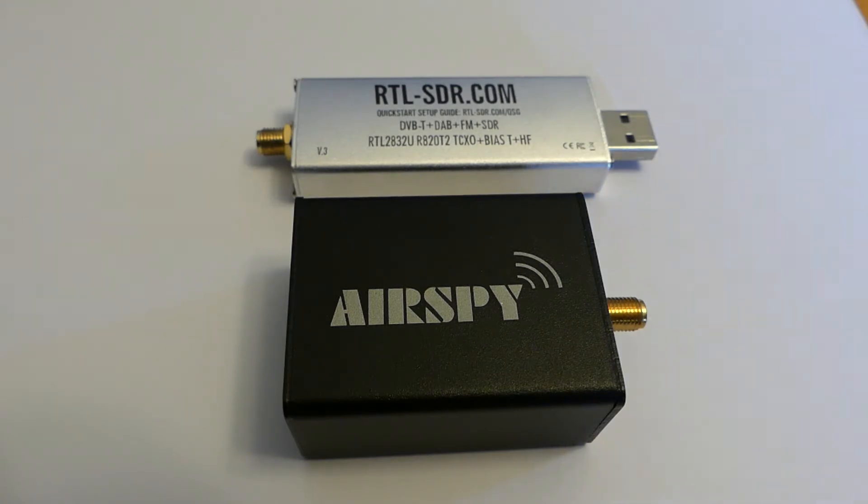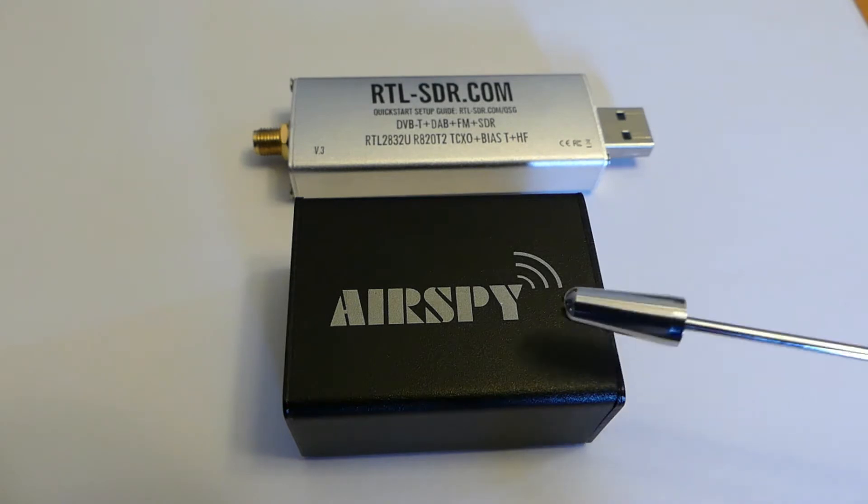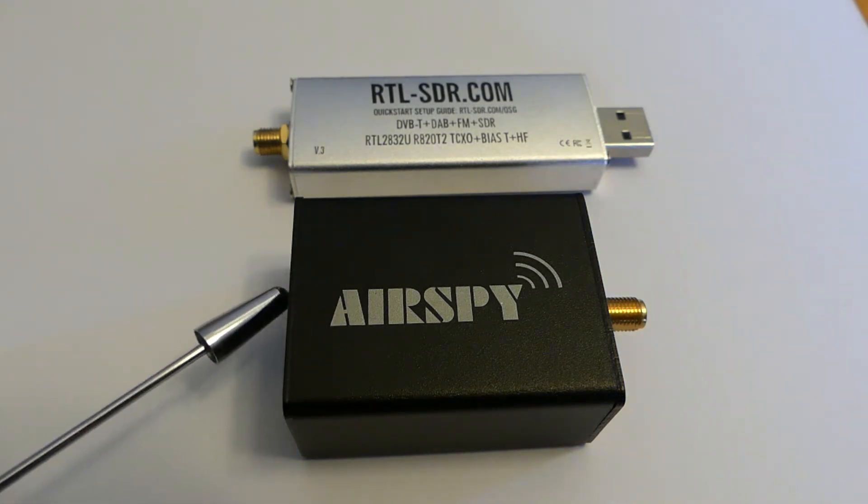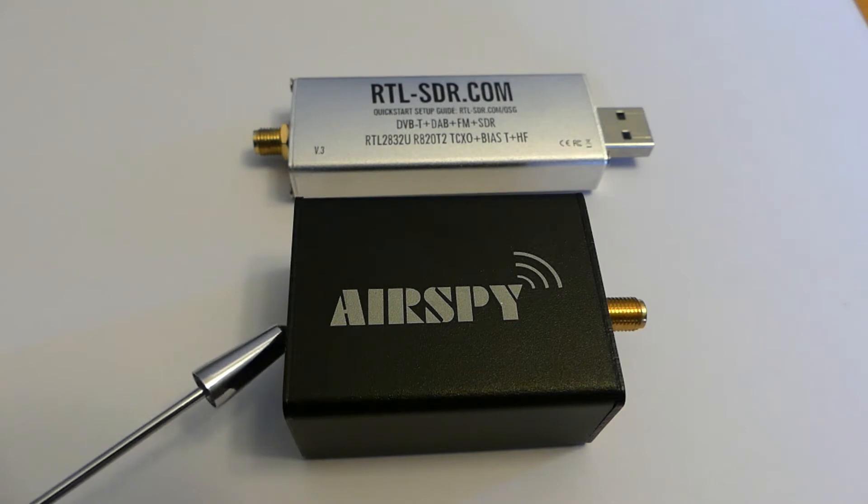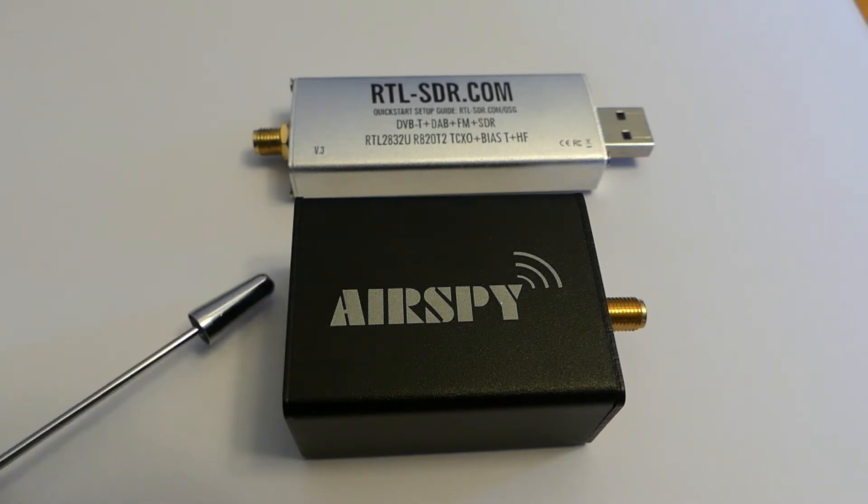Now the way it works folks is a radio signal goes into this side and on this side right here digits and numbers come out. Here's another one, the good old AirSpy. Same deal, radio signal goes in there and on the other side here's a little plug and digital numbers come out. Those digital numbers go to your computer and your software does a whole bunch of mathematical processing. Now I'm not going to get into the detail of all the mathematical processing because that's just way beyond the scope of this video today.